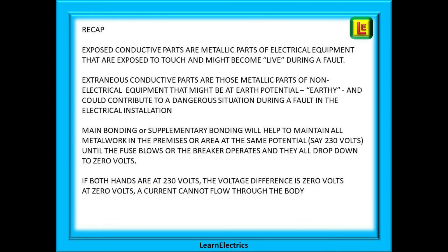A quick recap: exposed conductive parts are metallic parts of electrical equipment that are exposed to touch and might become live during a fault. Extraneous conductive parts are those metallic parts of non-electrical equipment that might be at earth potential and could contribute to a dangerous situation during a fault in the electrical installation. Main bonding or supplementary bonding will help to maintain all metalwork in the premises at the same potential — say 230 volts — until the fuse blows or the breaker operates and they all drop down to zero volts. If both hands are at 230 volts, the voltage difference is zero volts, and at zero volts a current cannot flow through the body.